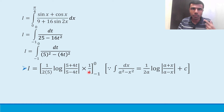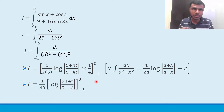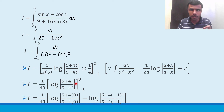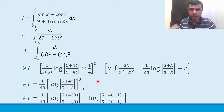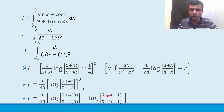Since 2·5 = 10 and 10·4 = 40, the constant is 1/40. Now substituting the limits: first put t = 0 (upper limit) — log|(5 + 0)/(5 - 0)| = log|5/5| = log 1. Then put t = -1 (lower limit) — log|(5 - 4)/(5 + 4)| = log|1/9|.